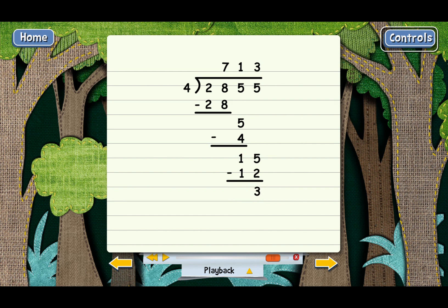And the last step is to subtract. What's 15 minus 12? You got it. There are no more digits to bring down, so we're done. Our answer is 713 with a remainder of 3, so we put the remainder right next to the answer.